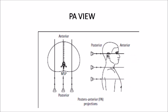Now, beginning with the various extraoral projections, the first and foremost is the PA, or Posterior Anterior View. In this projection, x-rays are passed parallel to the mid-sagittal plane, from the posterior to the anterior region.